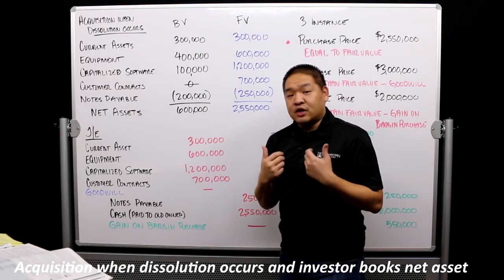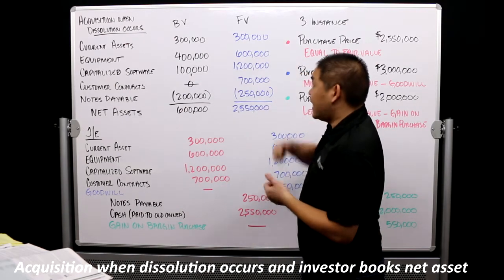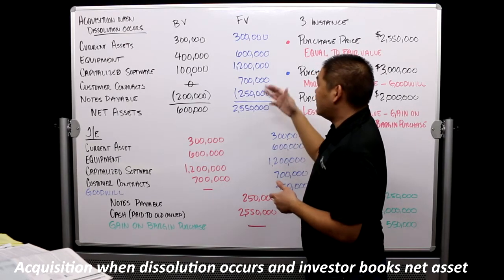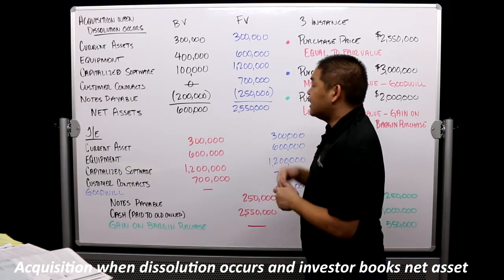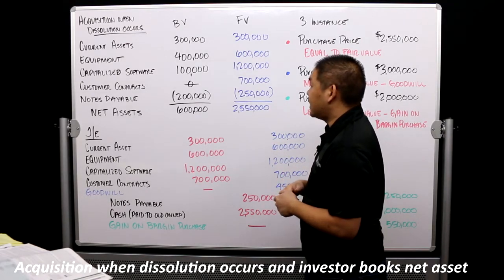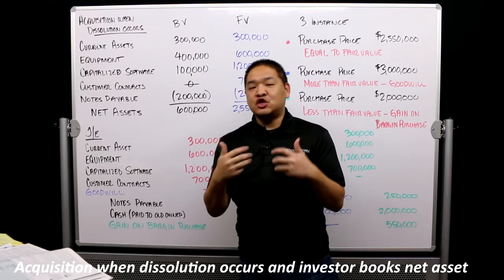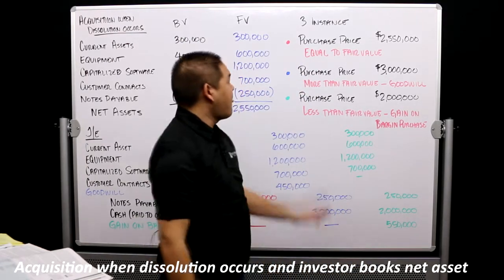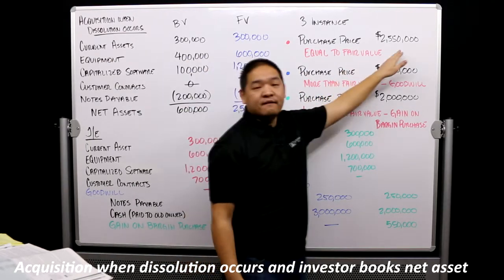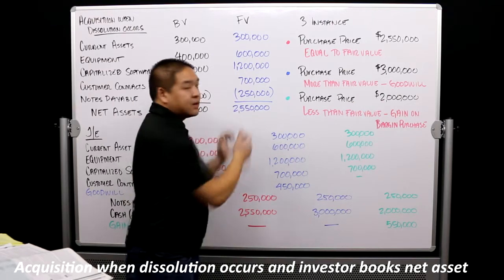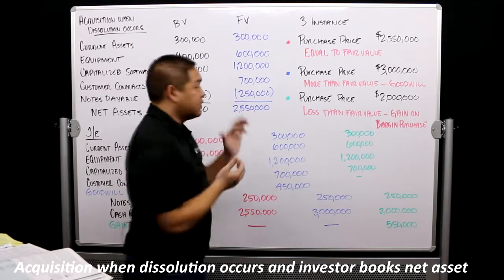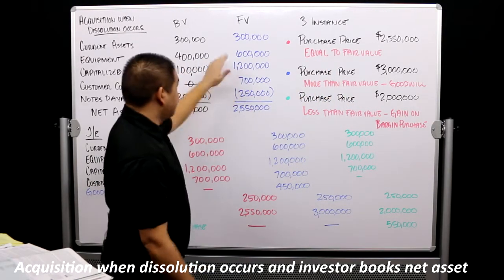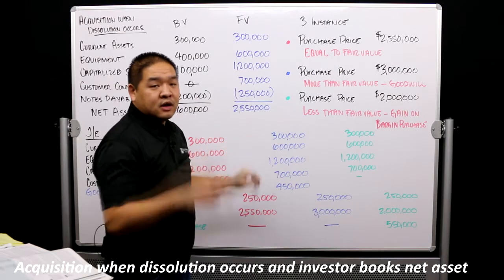So three situations. One: the purchase price is $2.55 million, meaning we pay exactly what they're worth - equal to fair value. Two: purchase price is more than fair value. Three: purchase price is less than fair value. I've color-coded the journal entries: red is when the purchase price is $2.55 million, blue is when the purchase price is $3 million, and green is when the purchase price is $2 million.